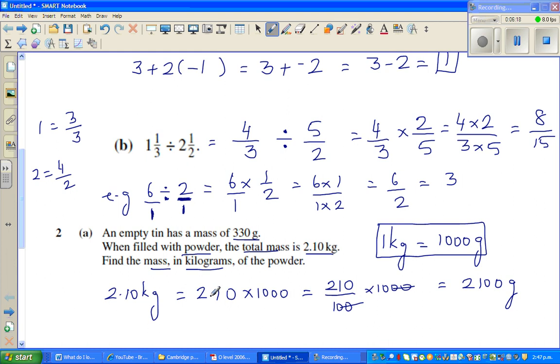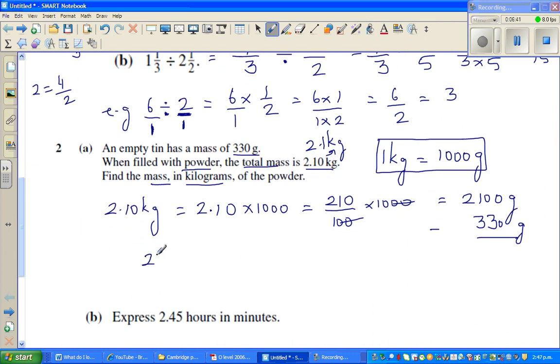You can do this directly. So 2.1 kg is same as 2 kg is 2000 grams and 0.1 kg is 100 grams. So now you have to take away 330 grams. So I'll go first 2100, take away 300 grams. So that I know is 1800 grams. And then I have to take away the 30 grams, which is 1770 grams. And that I can write as kilogram. When you divide this by 1000, this is 1.77 kg. So the weight of the powder is 1.77 kg.